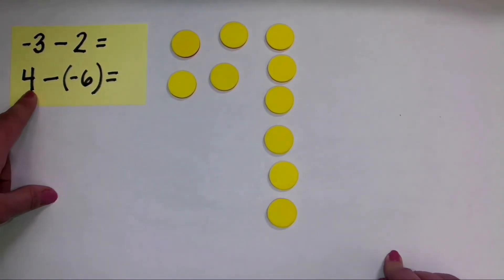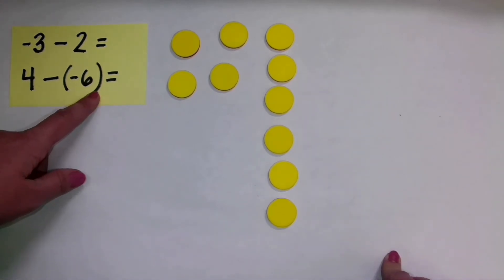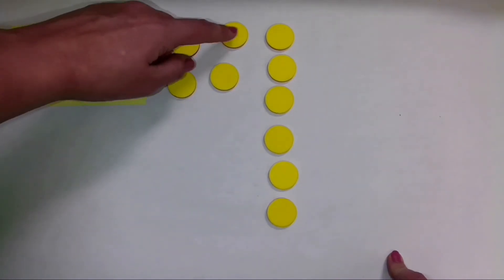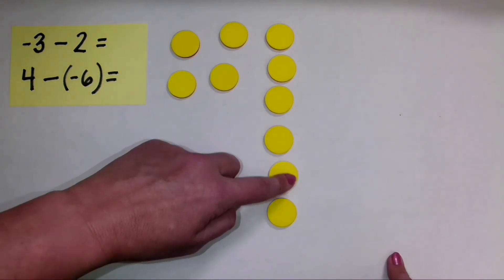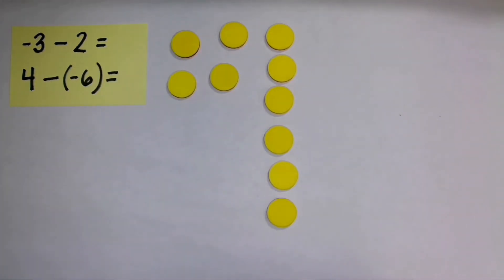So when I have four and I subtract negative six, the difference is one, two, three, four, five, six, seven, eight, nine, ten, positive ten.